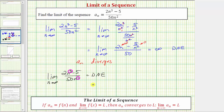Using the shortcut method, we look at the leading coefficients in the numerator and denominator to determine whether the limit approaches positive or negative infinity. Notice how both leading coefficients are positive, and because n is approaching positive infinity, this limit approaches positive infinity.